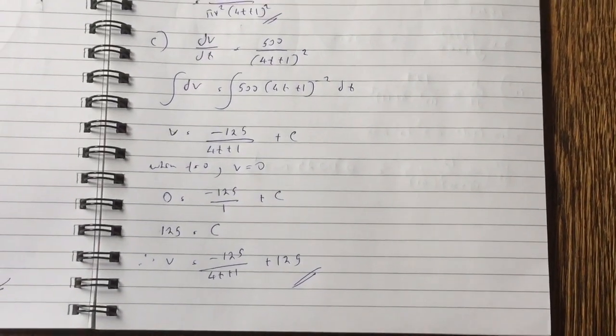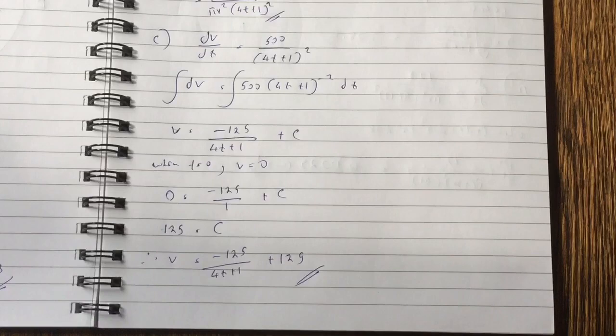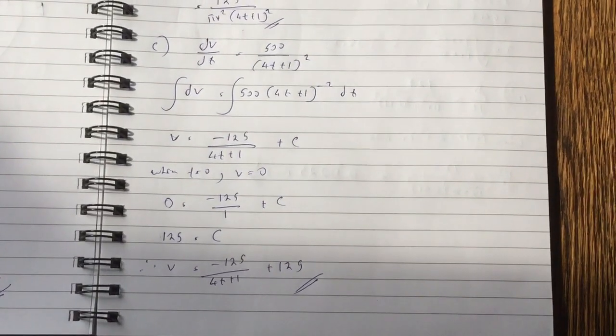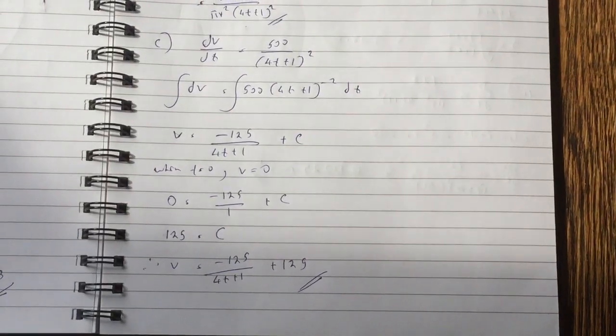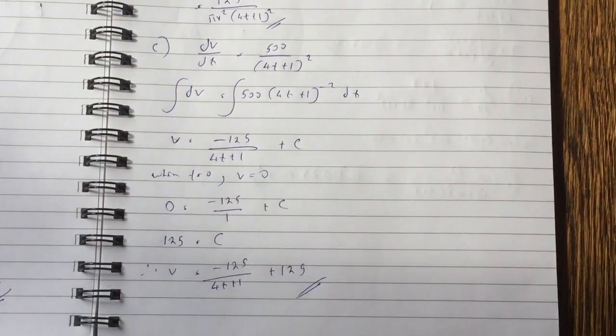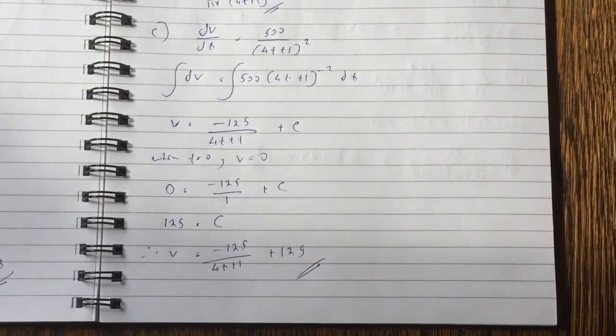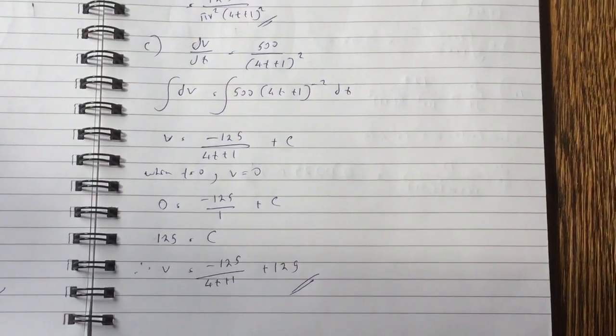You're dividing by minus 4 because there's a power minus 1 and there's a 4 factor coming out from the bracket. We know that when t equals 0, v equals 0. So that gives you c equals to 125. So our equation is minus 125 over 4t plus 1 plus 125.